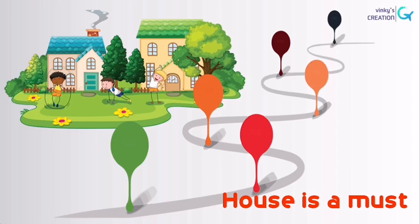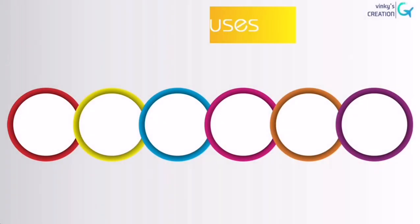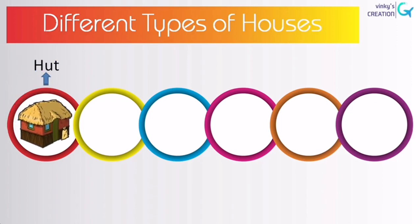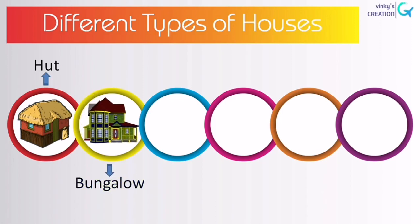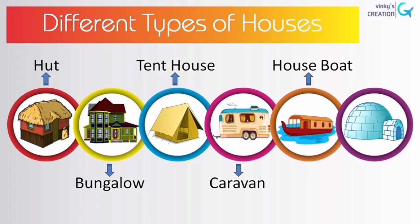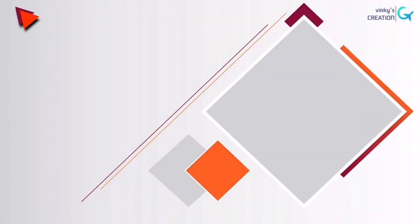Hello children. A house is a place where we live. House is a must. There are different types of houses like hut, bungalow, tent house, caravan, houseboat, and igloo. So let's discuss about them one by one.